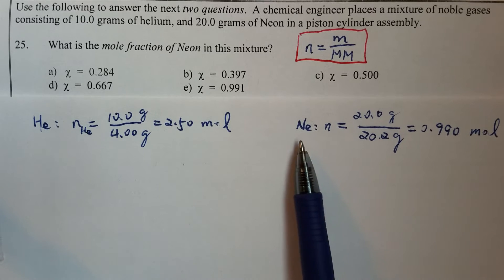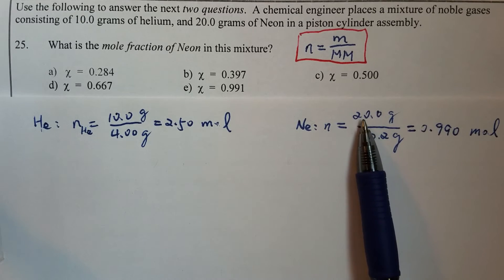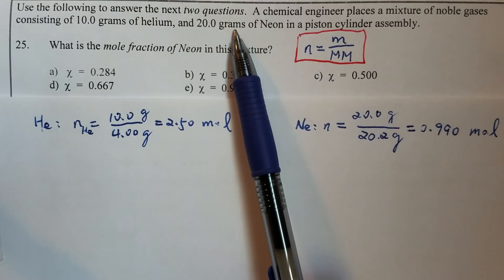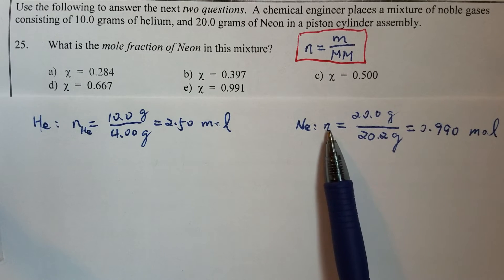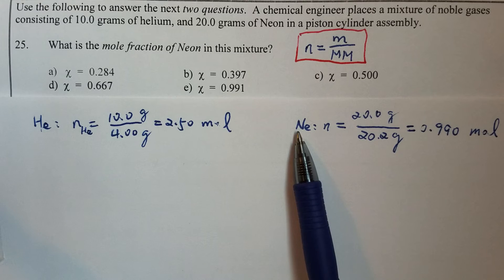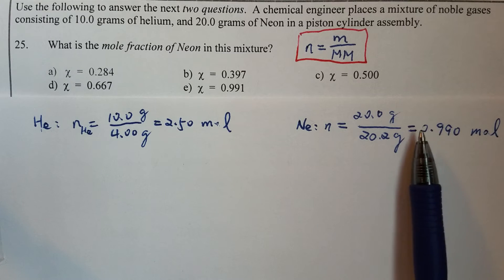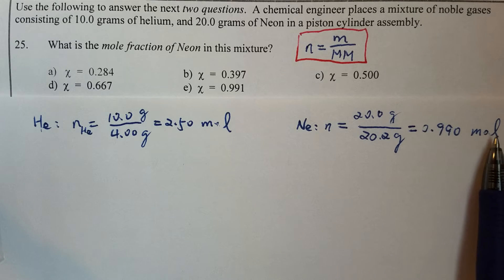We do the same for neon, number of moles, so 20 grams divided by the molar mass of neon, so that's 20.2 grams. That gives us 0.99 moles.